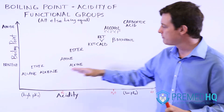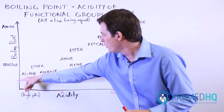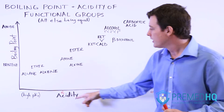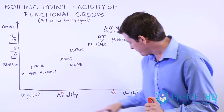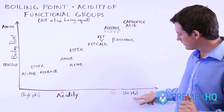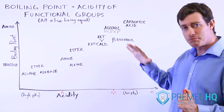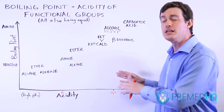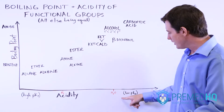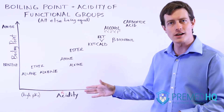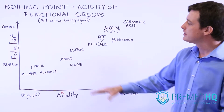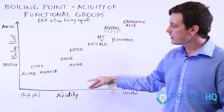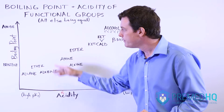We've set up a plot with boiling point as the y-axis and acidity as the x-axis. Notice that low acidity means a high pKa, and high acidity means a low pKa. Remember, whenever a pKa is low, that means it's a strong acid, and if the pKb is low, that means it's a strong base — so low pKa equals strong acid. We've simply laid out the functional groups you might encounter in organic chemistry according to these two metrics: acidity and boiling point.